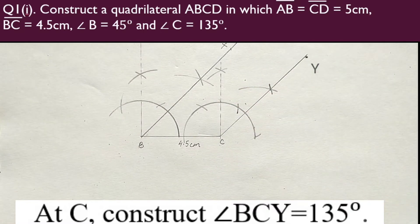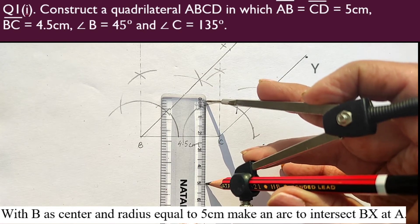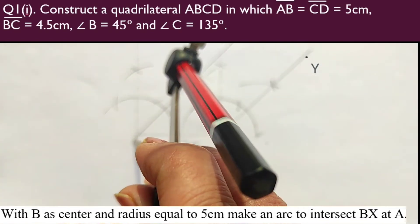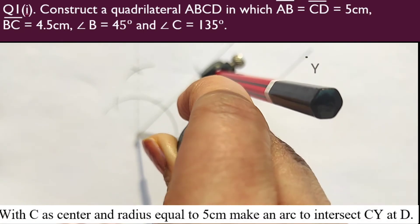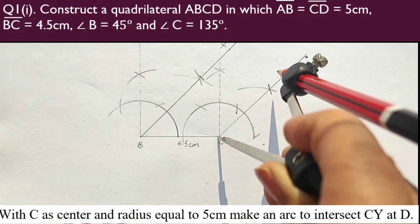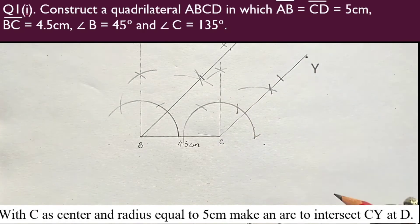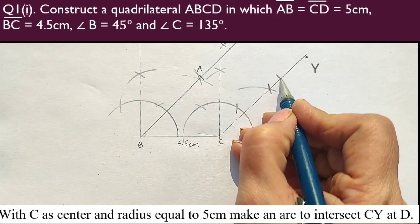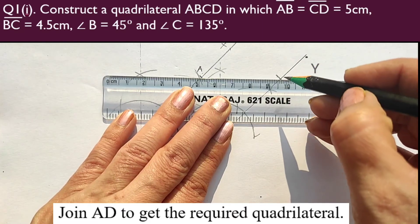Wherever these two arcs intersect, if I join the point of intersection to point C, the angle formed is 135°. So angle BCY equals 135°. Now, AB equals CD equals 5 cm. With B as center and radius equal to 5 cm, I make an arc on ray BX. Exactly the same way, with C as center and radius 5 cm, I make an arc on ray CY to get points A and D respectively. I join A and D to get the required quadrilateral ABCD.